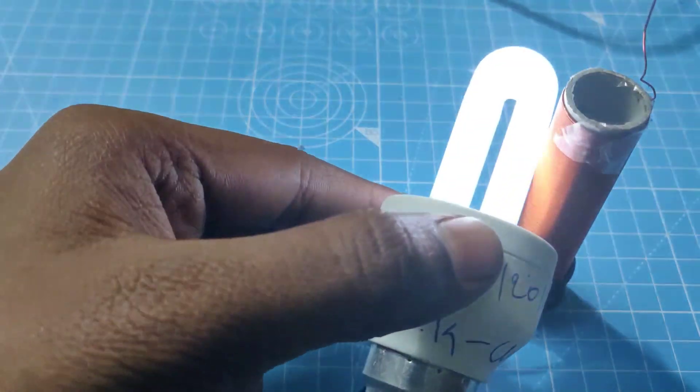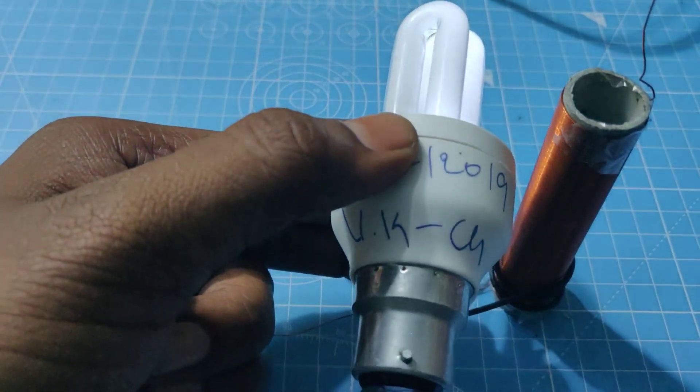Now take the CFL bulb near to the secondary coil. You can observe the bulb is glowing.